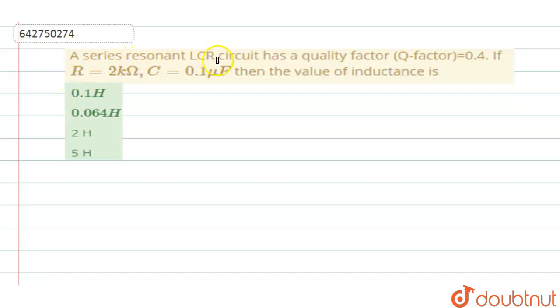A series resonant LCR circuit has a quality factor or Q factor as 0.4. If R is equal to 2 kilo ohms, C is equal to 0.1 micro farad, then the value of inductance is.